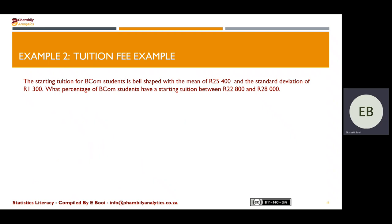Let's look at another example. The starting tuition for BCom students is bell-shaped with a mean of 25,400 and a standard deviation of 1,500. What percentage of BCom students have a starting tuition between 22,800 and 28,000? To answer this, we need to calculate the ranges so that we can identify which standard deviation band the values fall within.